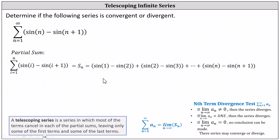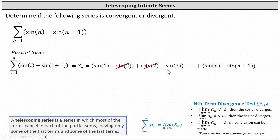Now to analyze the partial sum: notice we have a negative sine 2 in the first set of parentheses, and a positive sine 2 in the next set of parentheses — negative sine 2 plus sine 2 is 0. In the second set of parentheses we have a negative sine 3, and there would be a positive sine 3 from the next set of parentheses when i equals 4, so the minus sine 3 also simplifies out.